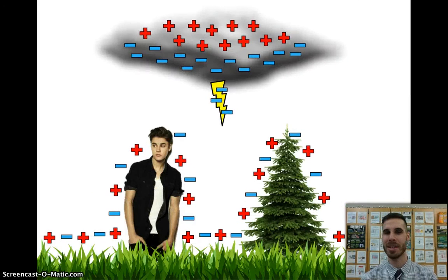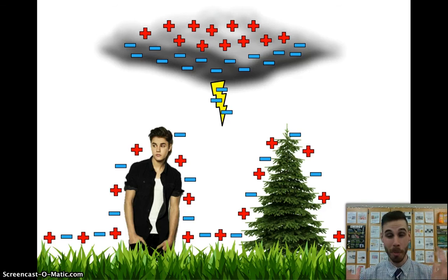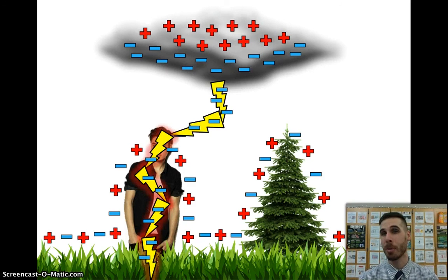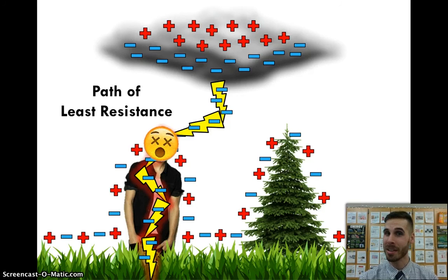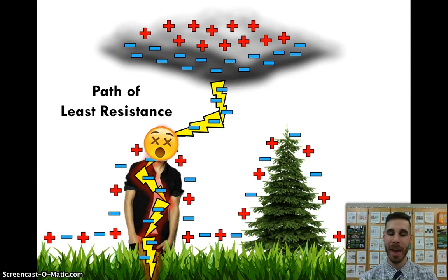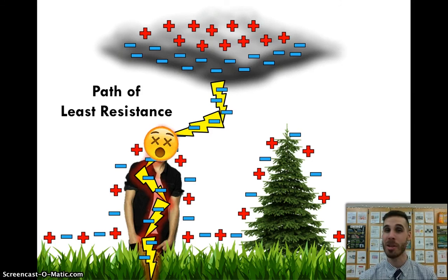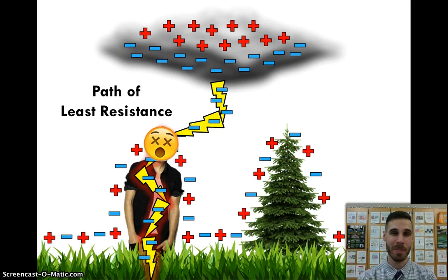So with that in mind, the question remains: is Justin Bieber going to get struck by lightning? Or is the tree going to get struck? Or neither? Or both? And the answer is, as you may have guessed, Justin Bieber will get struck by lightning. He'll become what's called the path of least resistance — the path that the electrons can choose to take that will require the least amount of effort, where they meet the least amount of resistance. Justin Bieber, unfortunately, being made out of flesh rather than wood, was the path of least resistance. So is it too late now to say sorry? Apparently, Justin, apparently.